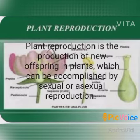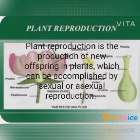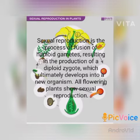Sexual reproduction is the process of fusion of haploid gametes, resulting in the production of a diploid zygote, which ultimately grows into a new organism or flowering plant through sexual reproduction.